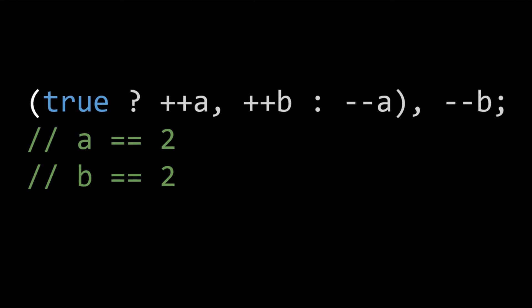Remember that the comma operator has the lowest precedence. In this case, the comma operator acts as the terminator to the ternary.